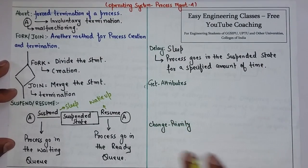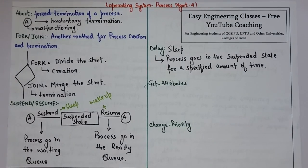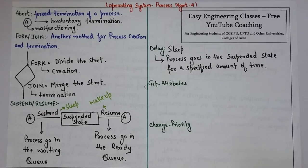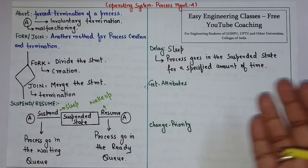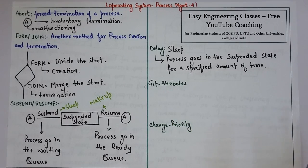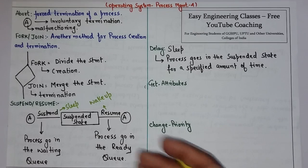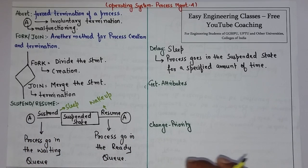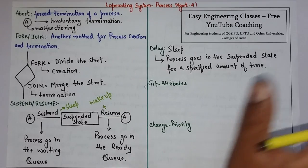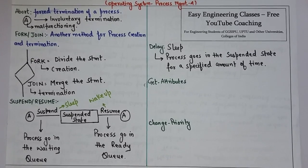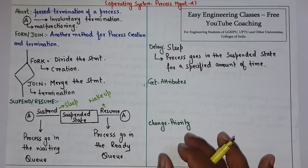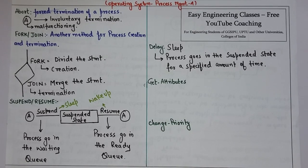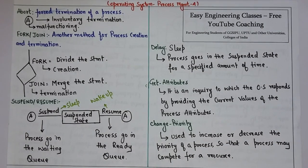We also have get attributes and change priority. Get attributes is basically an inquiry in which the operating system responds to a process by providing the current values of its attributes — similar to a SELECT query in SQL, which a process fires into the operating system and the OS responds with the attribute values. Change priority is used to change the priority of a process; this will be clearer when you study the scheduling part.